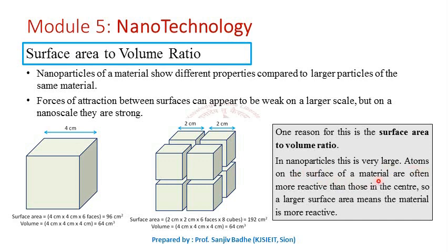Atoms on the surface of a material are often more reactive than those in the middle. Therefore, a larger surface area means more atoms are available for reactions, meaning the material is more reactive. This results in stronger forces of attraction between surfaces when the material is reduced to the nanoscale, and this is one important reason why nanoparticles show different properties compared to the larger particles of the same material.